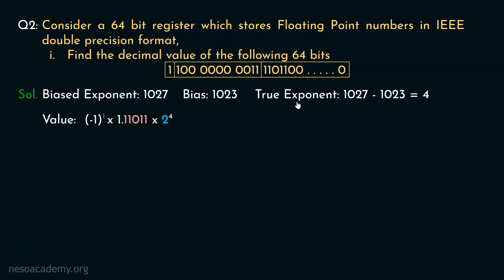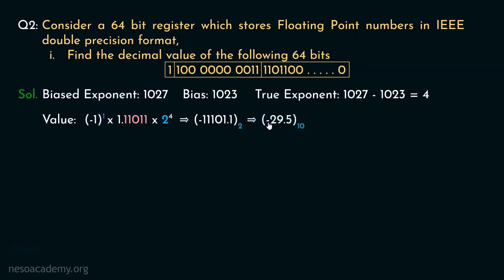Applying the implicit normalized form: minus 1 raised to 1, multiplied by 1.11011, multiplied by 2 raised to 4. This gives the binary value minus 111010 1.1. The integer bits with place values 16, 8, 4, and 1 give: 16 plus 8 is 24, plus 4 is 28, plus 1 is 29. The bit after the radix point has place value 0.5, so the final decimal value is minus 29.5.